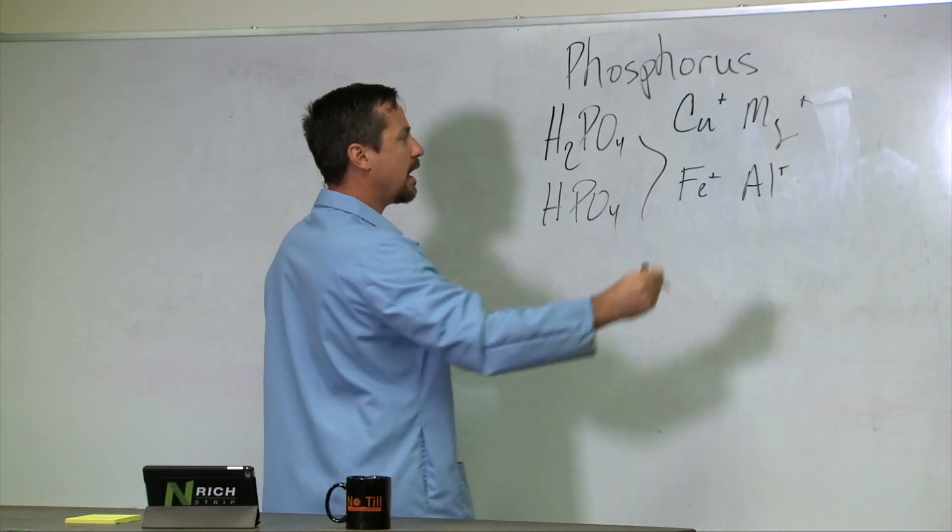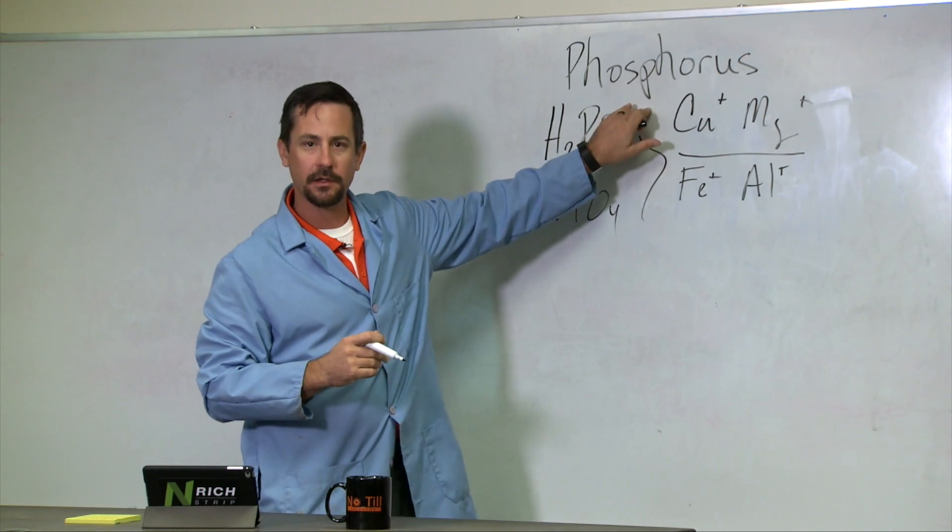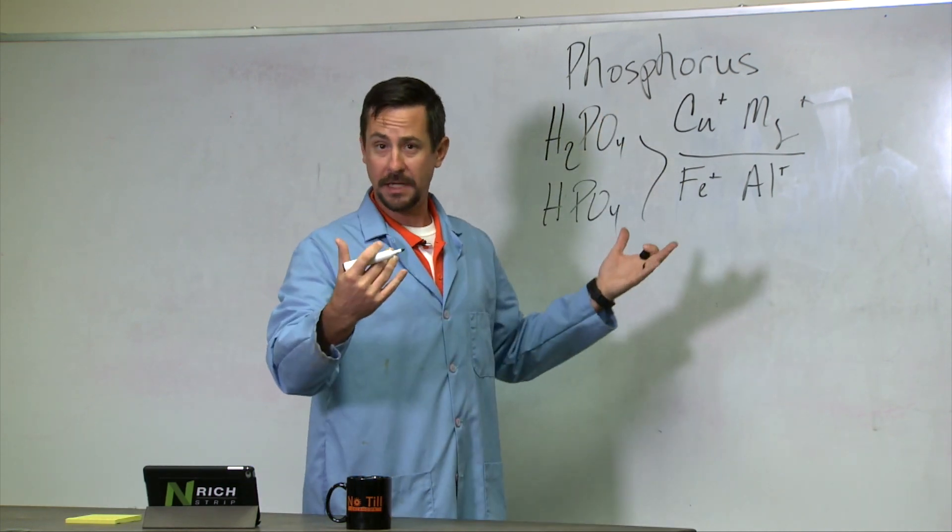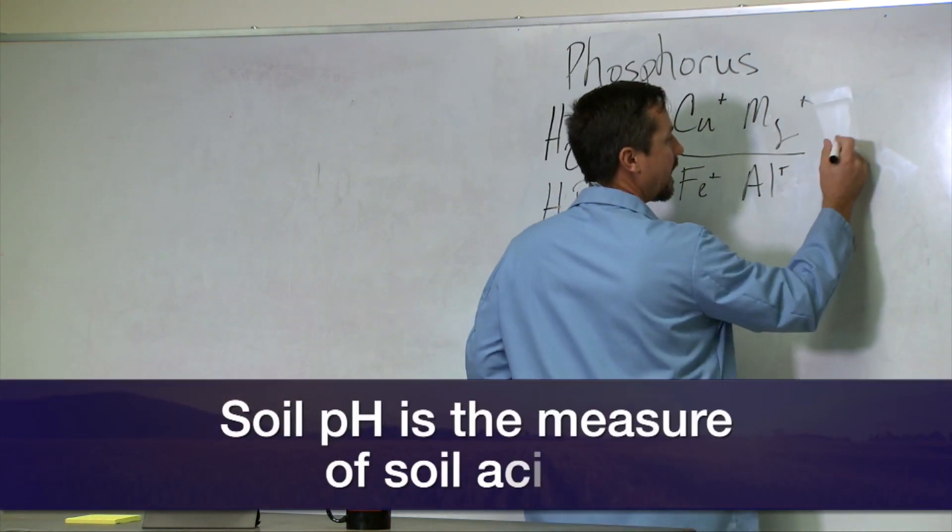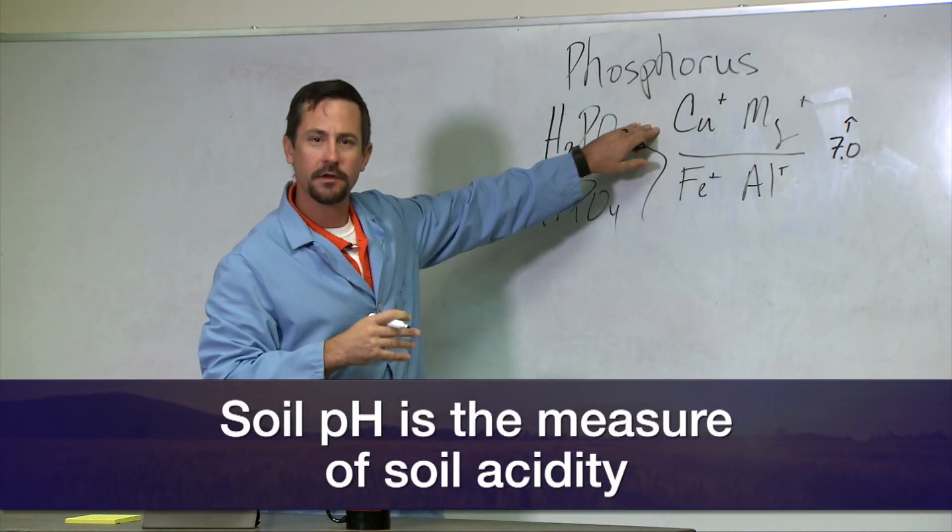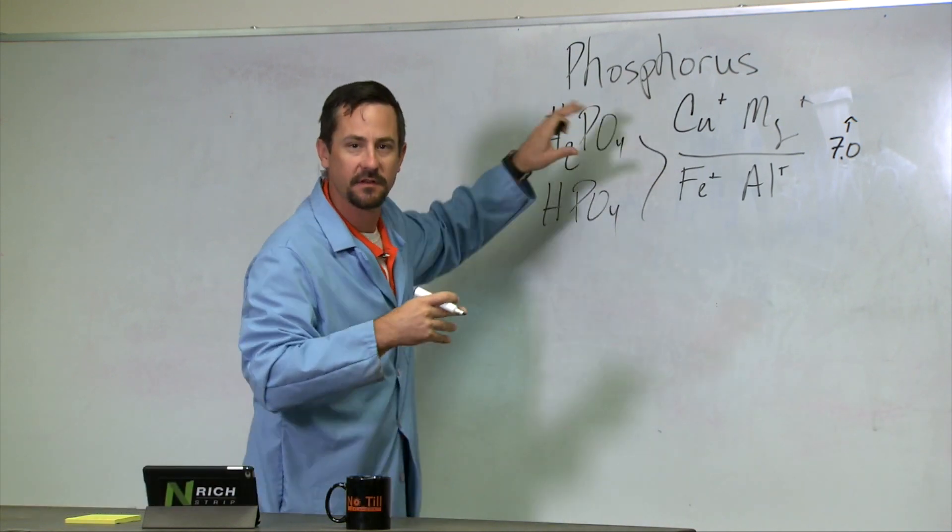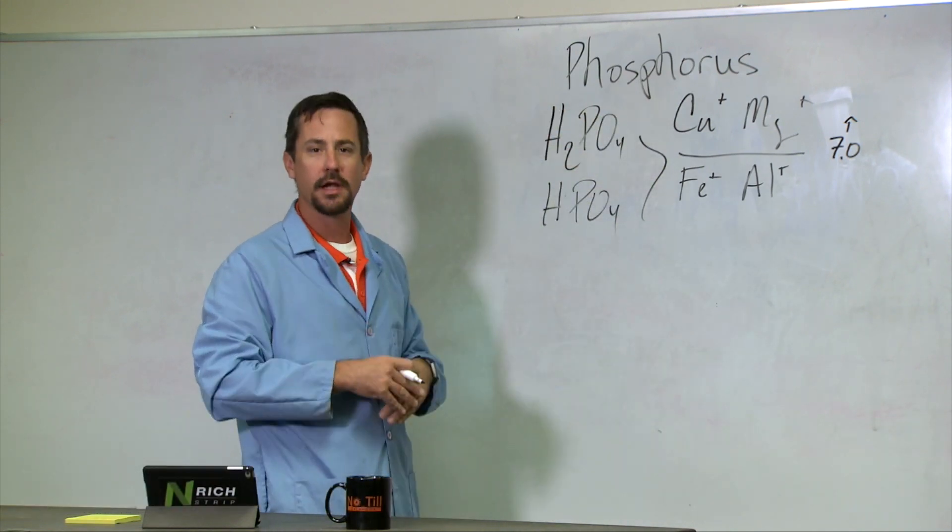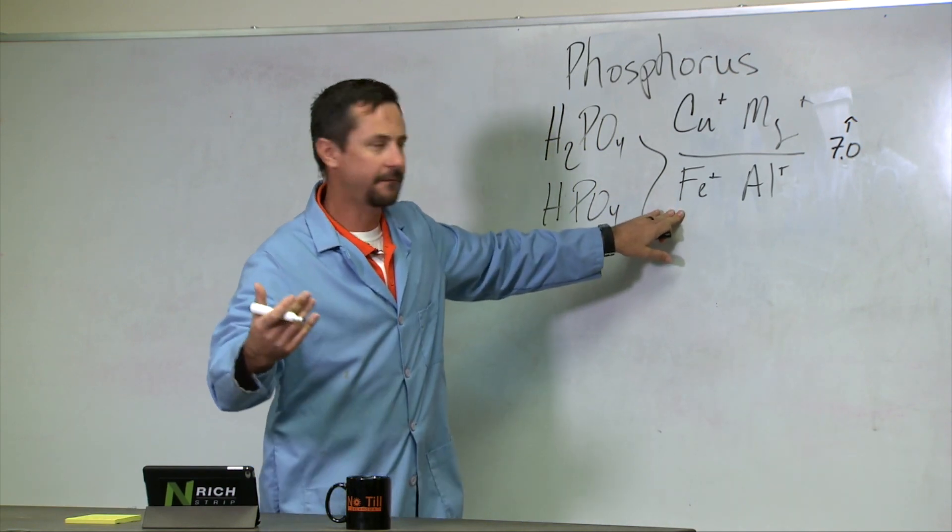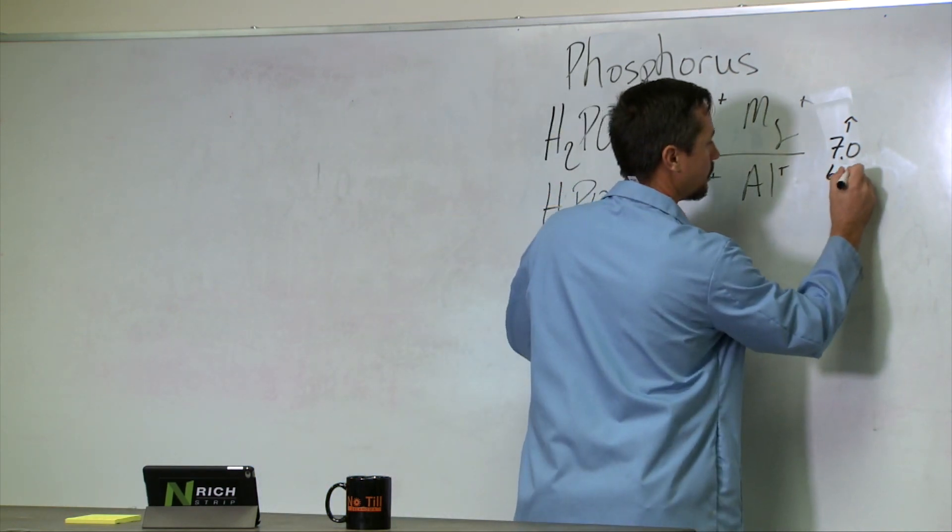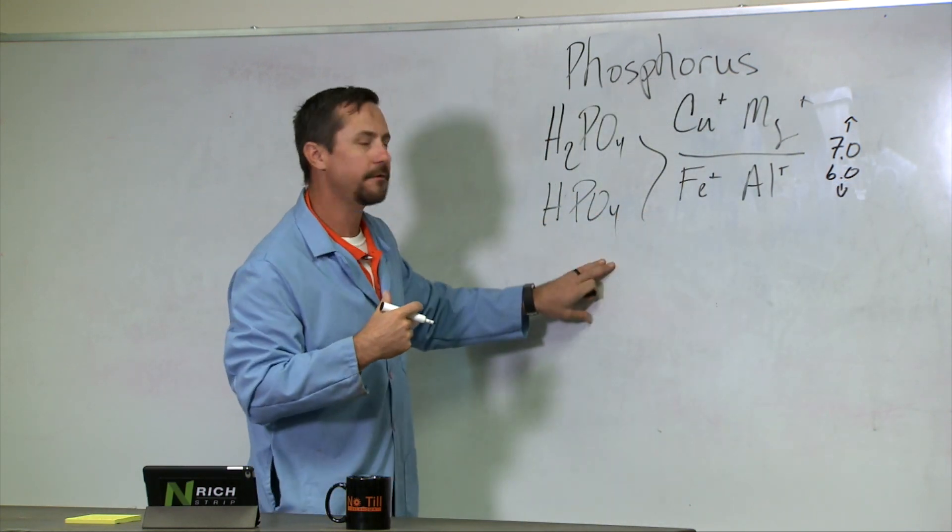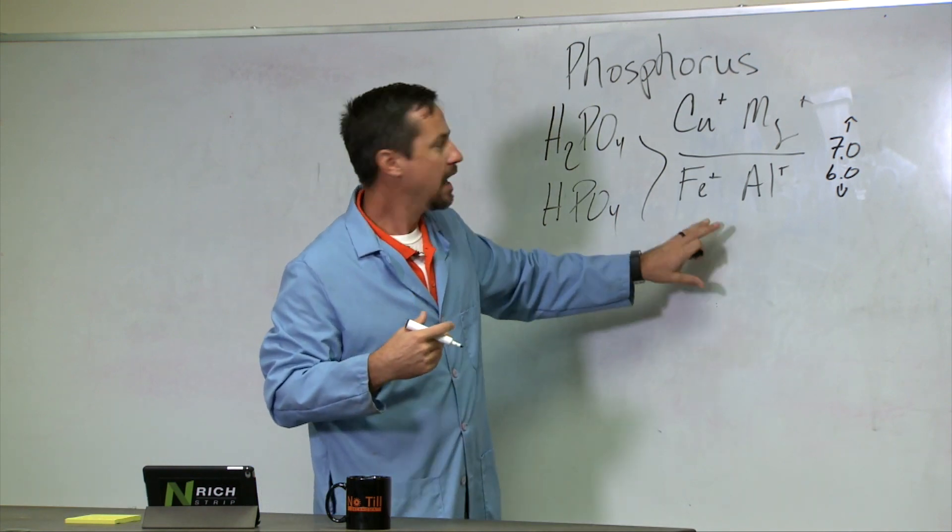Where it binds—whether to calcium or iron—is based on soil pH. At pH 7 or above, it's going to concentrate on the calciums in the system, creating calcium phosphates. In acidic soils below pH 6, we're binding with irons and aluminums, creating iron phosphates and aluminum phosphates.